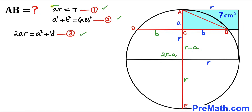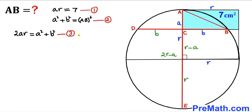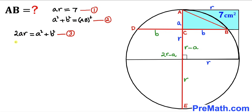We now have three equations: Equation 1: ar = 7; Equation 2: a² + b² = AB²; Equation 3: 2ar = a² + b². Focusing on Equation 3, we replace ar with 7 from Equation 1, giving 2 × 7 on the left side. We also replace a² + b² with AB² from Equation 2 on the right side.